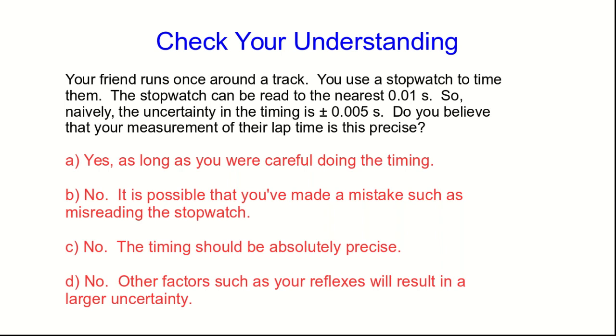Let's take a moment to check your understanding. So if you're in the course, and if you're accessing these videos through Moodle, this video is about to end, and Moodle will ask you this question before sending you on to the next part of this video lecture. If you're not in my course, then I suggest you should still come up with an answer to this before you go on. So let's say your friend runs around a track, and you use a stopwatch to time them. And like most stopwatches, this one can be read to the nearest hundredth of a second. So naively, we'd expect that the uncertainty in the timing is half of that, or about five thousandths of a second. So do you believe that your measurement of their lap time is this precise, to plus or minus 0.005 seconds? So have a look at the answers, and come up with your answer, and then go on to the next part of this video lecture.